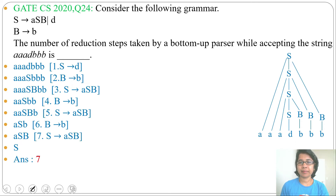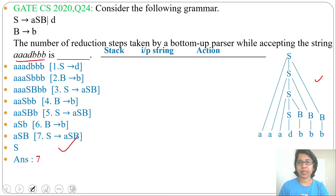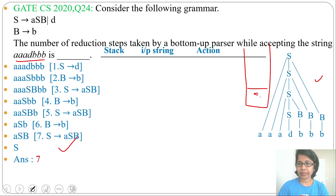There is another way: a general type of bottom-up parsing is shift-reduce parsing. You can do shift-reduce parsing and identify how many reductions there are, but that will be a little bit time-consuming. Let me explain shift-reduce parsing for this string AADBBB. There will be three columns: stack, input string, and action. Initially, the stack will contain dollar, and the input string contains the input string. The first action will be shift — we'll shift A onto the stack.